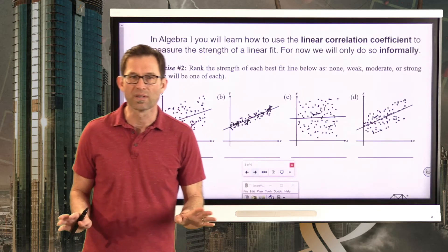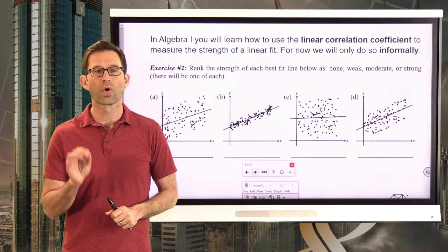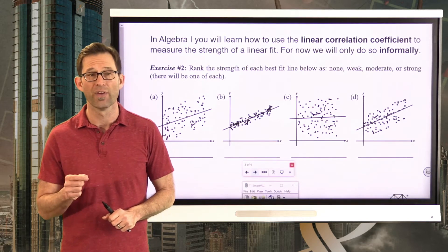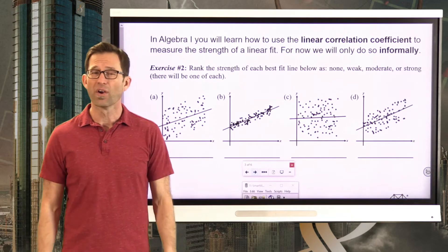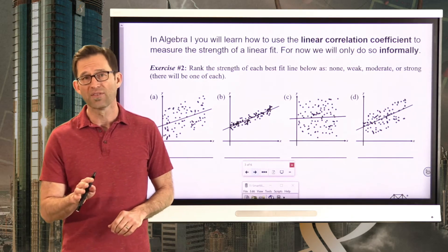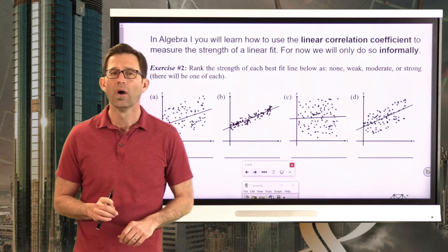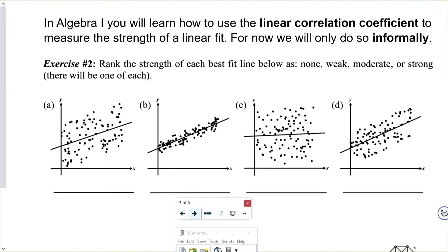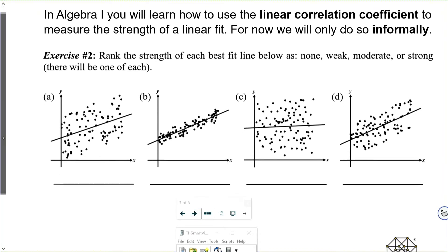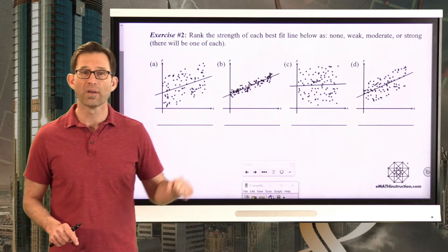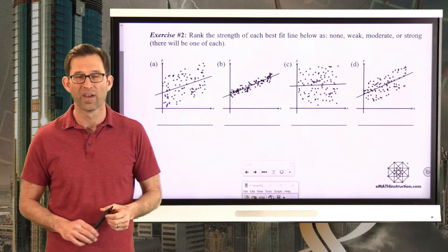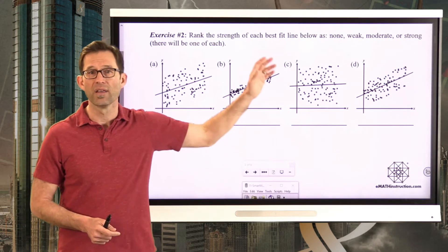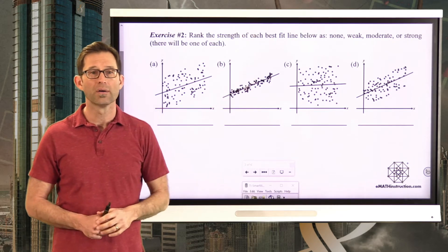In Algebra 1, you're going to learn how to use what's called the linear correlation coefficient to measure the strength of a linear fit. It'll be just one number, very similar to a percentage, that will tell you how strong the fit is. For now, all we can do is assess it informally. Exercise number two: rank the strength of each best fit line below as none, weak, moderate, or strong — there will be one of each. Write down your answer in each blank, and then we'll talk about them.